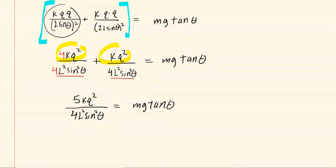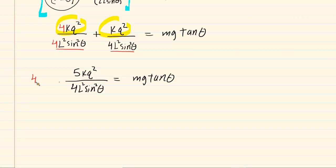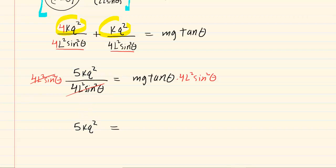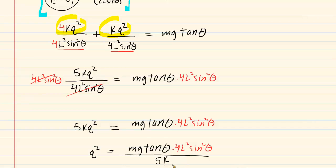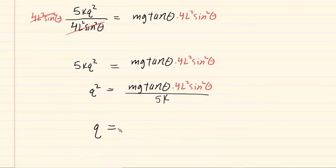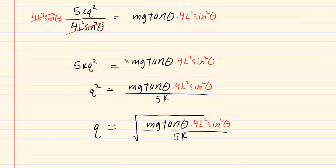To solve for Q, multiply both sides by 4L² sine² theta — those cancel on the left — giving 5KQ² equals 4L² sine² theta times mg tangent theta. Divide both sides by 5K to isolate Q², then take the square root of both sides. So Q equals the square root of (4 mg L² sine² theta tangent theta) divided by 5K. That is the final expression for Q.